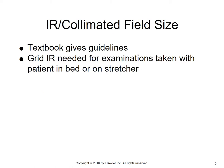The textbook gives guidelines as far as the IR and collimated field size. A grid IR is needed for examinations taken with the patient in the bed or on a stretcher, because you're going through a thicker part — hip or pelvis — so lots of scatter radiation is being generated via Compton effect, and you need to use a grid to capture that scatter before it hits the image receptor.